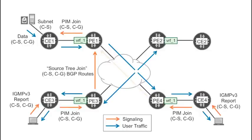There is a classic conflict in all multicast technologies: you must choose between signaling efficiency and data bandwidth efficiency. Inclusive tunnels are very efficient in terms of signaling, but not in terms of data bandwidth. If one single downstream PE requests a multicast flow, then this flow is sent to all the PEs in the MVPN, even to those with no receivers for that particular flow.